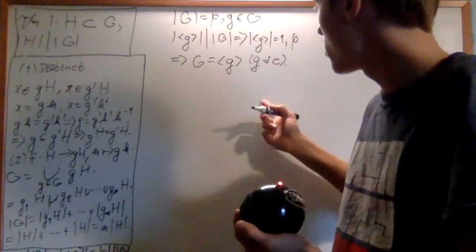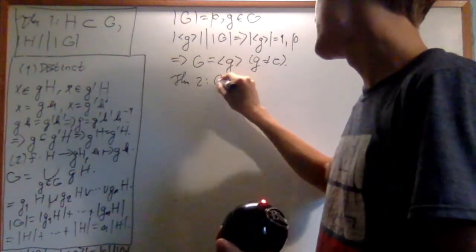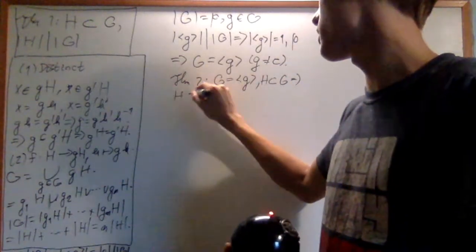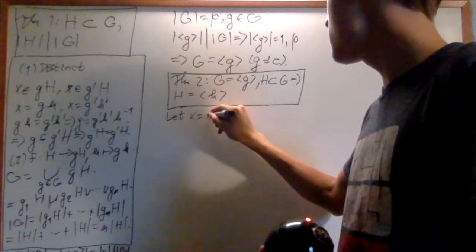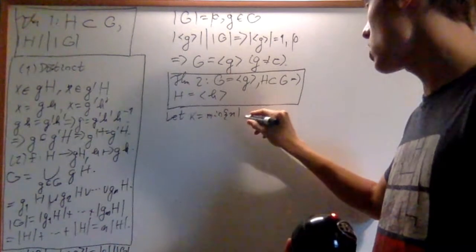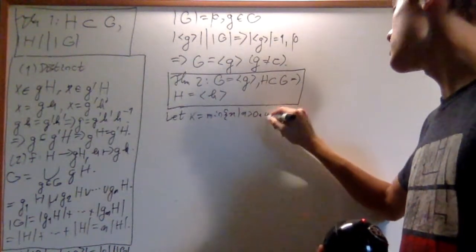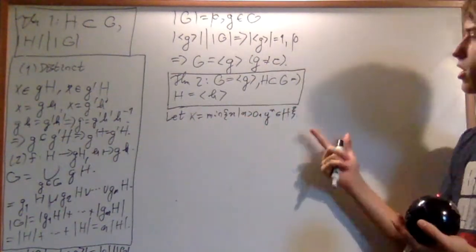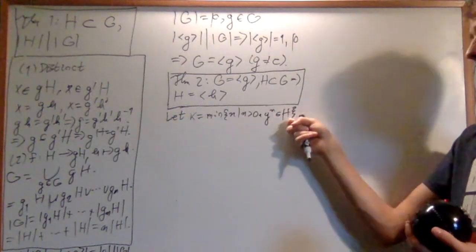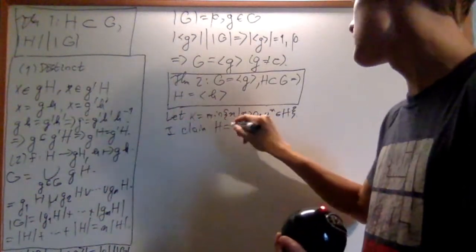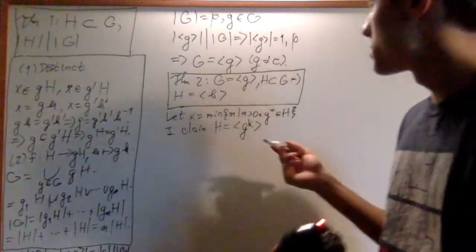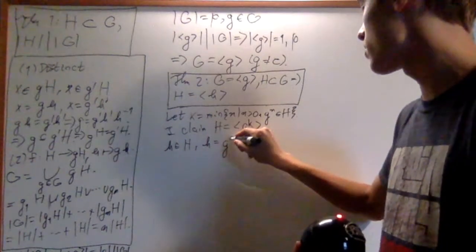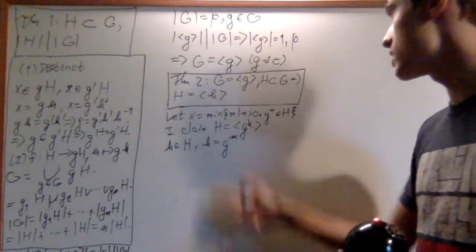Another fact about cyclic groups is that if G is a cyclic group and H is a subgroup of G, then H is cyclic. Let k be the minimum n such that n is greater than 0 and g to the n is an element of H. This must have a minimum because it's bounded below. So k is the minimum power of g that's in H. I claim H is the cyclic group generated by g to the k. Suppose h is an element of H — then h is going to be equal to some power of g, say g to the m, because G is cyclic.